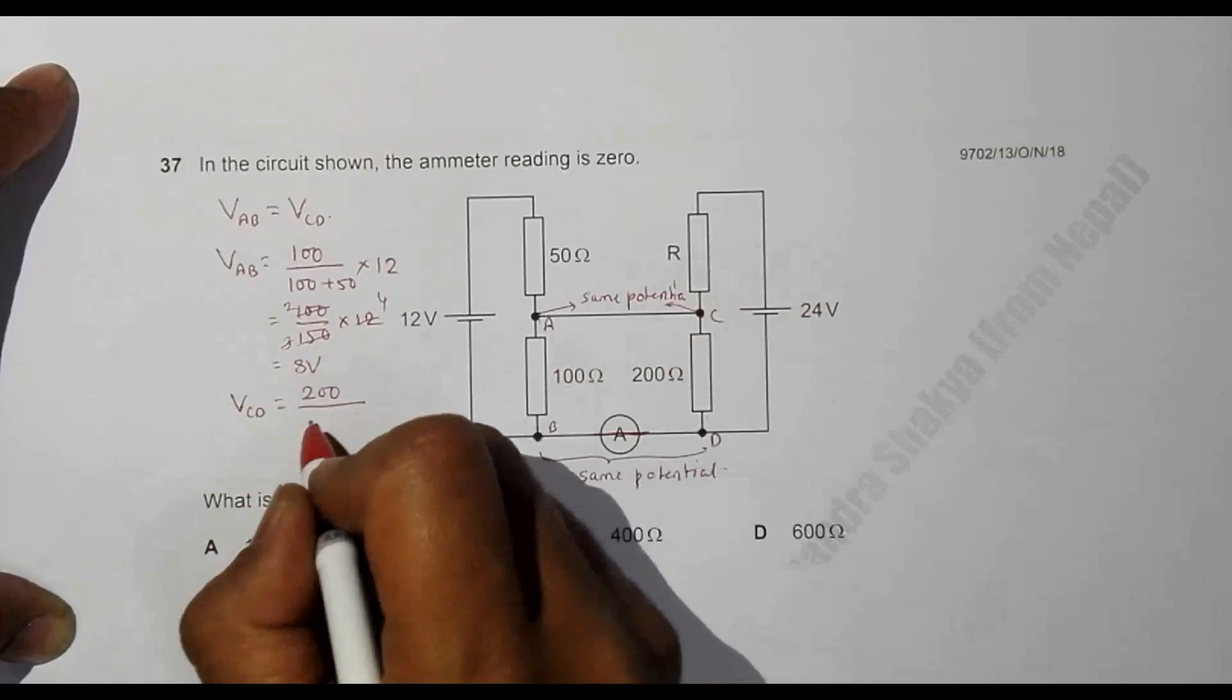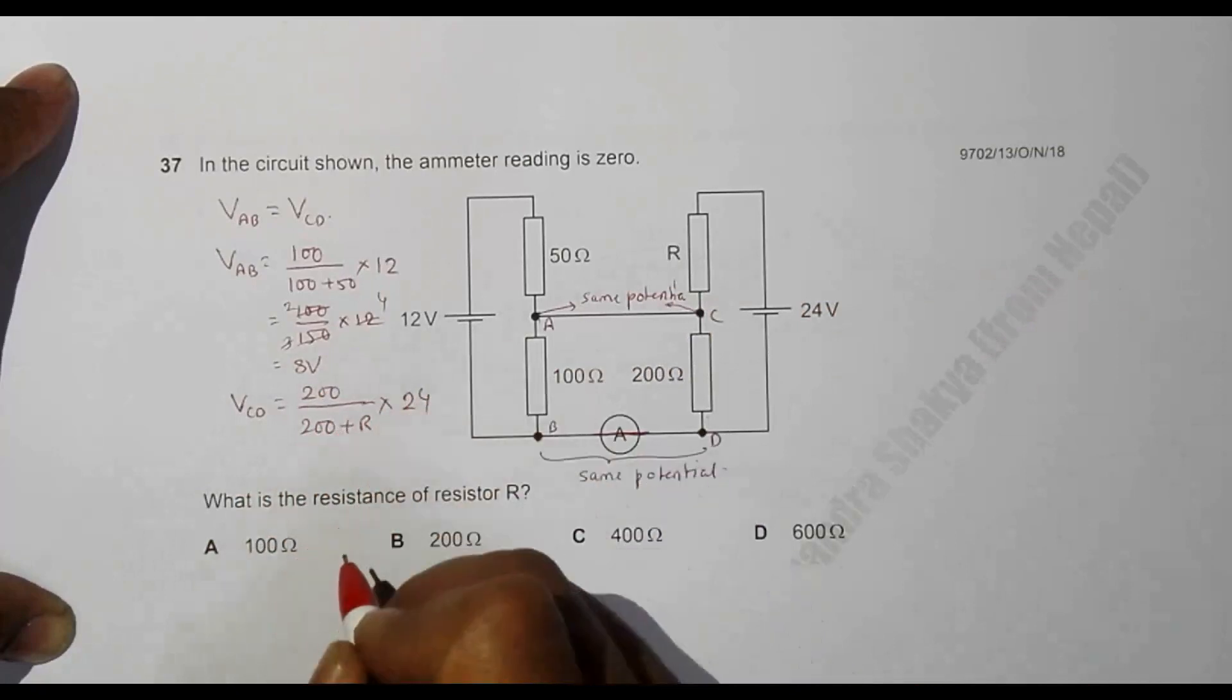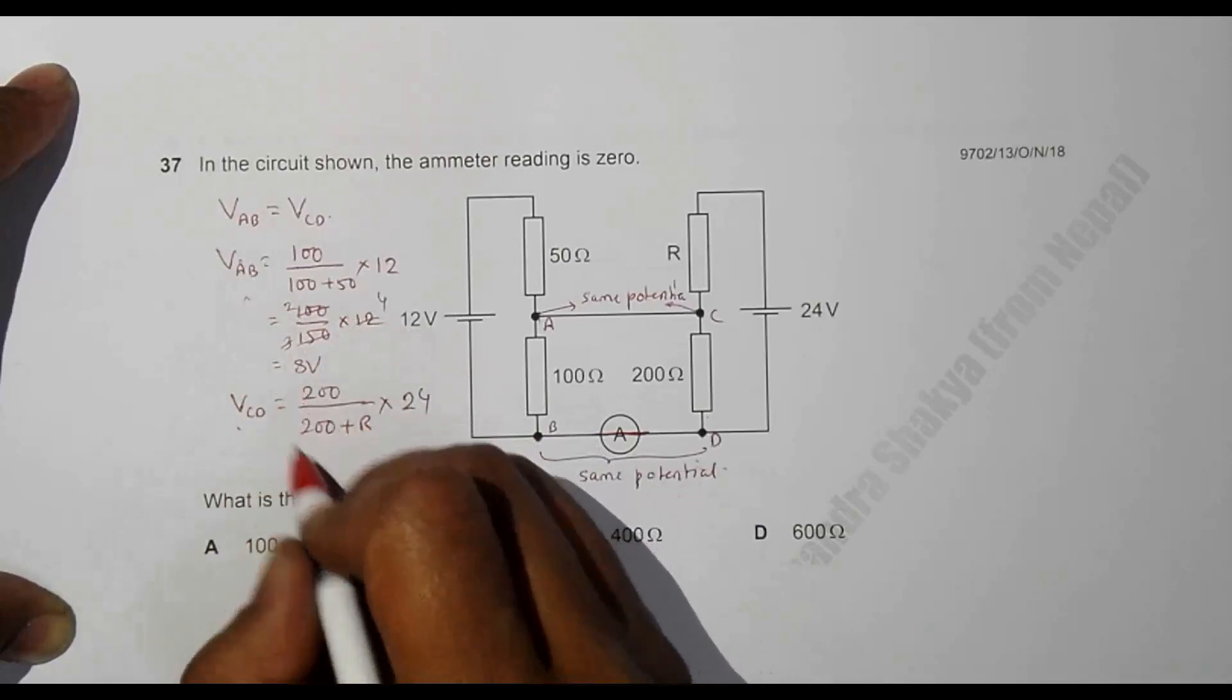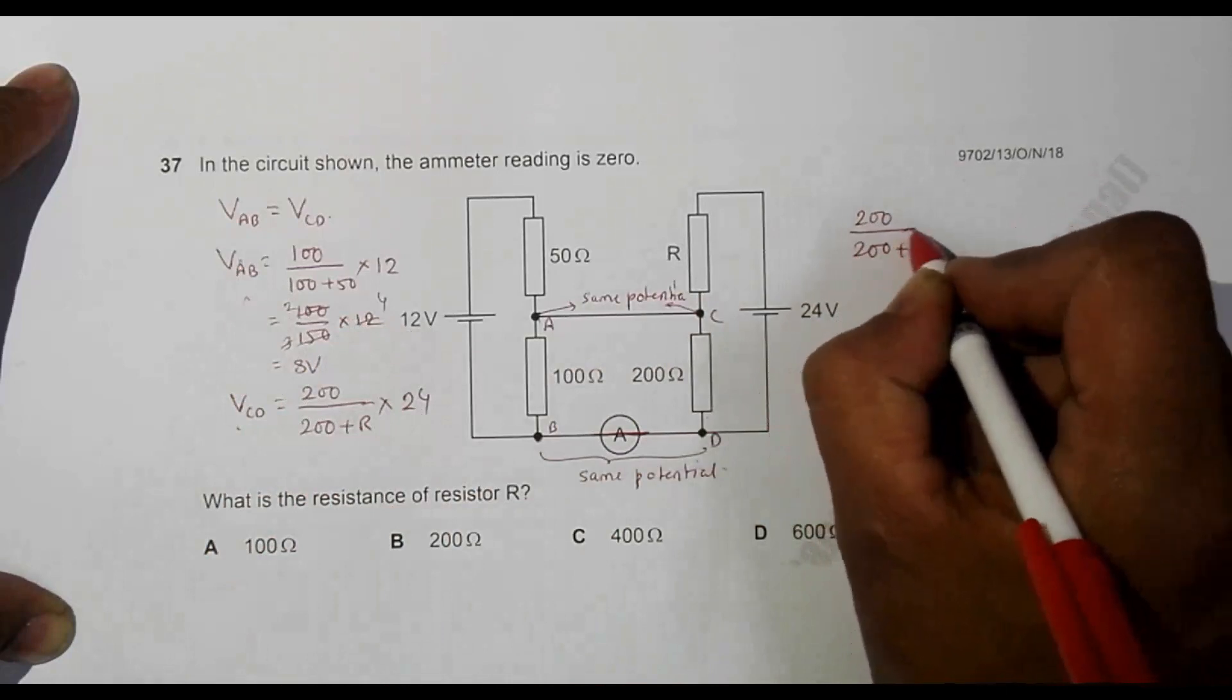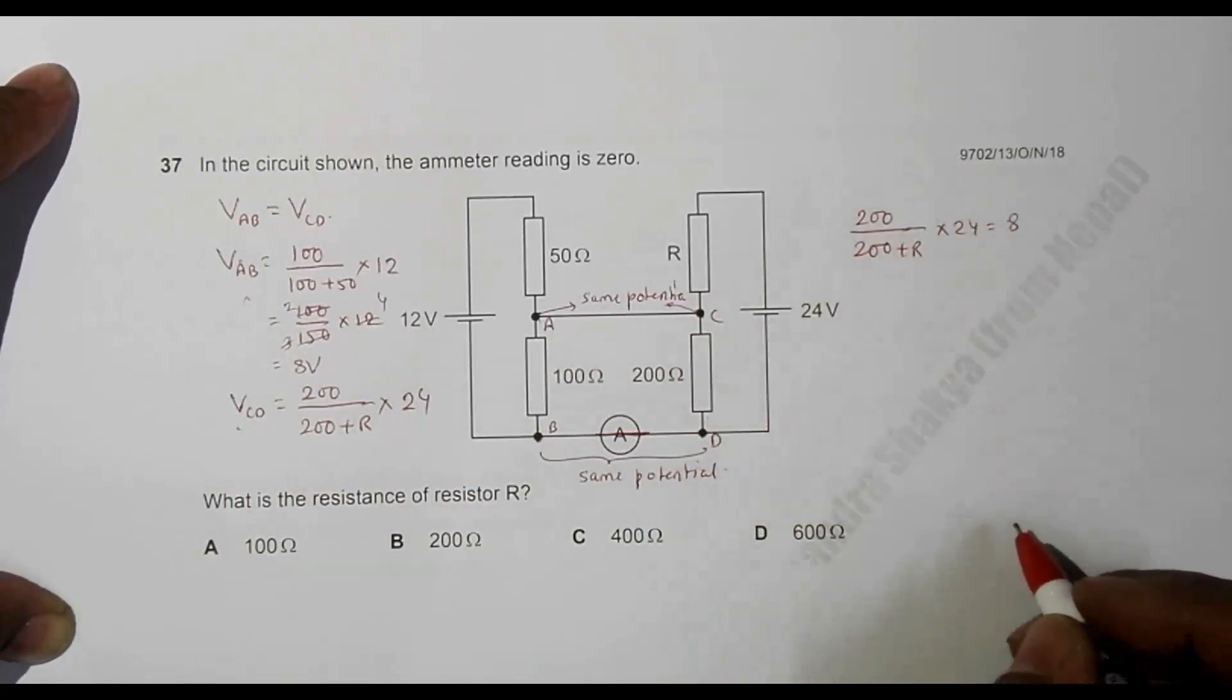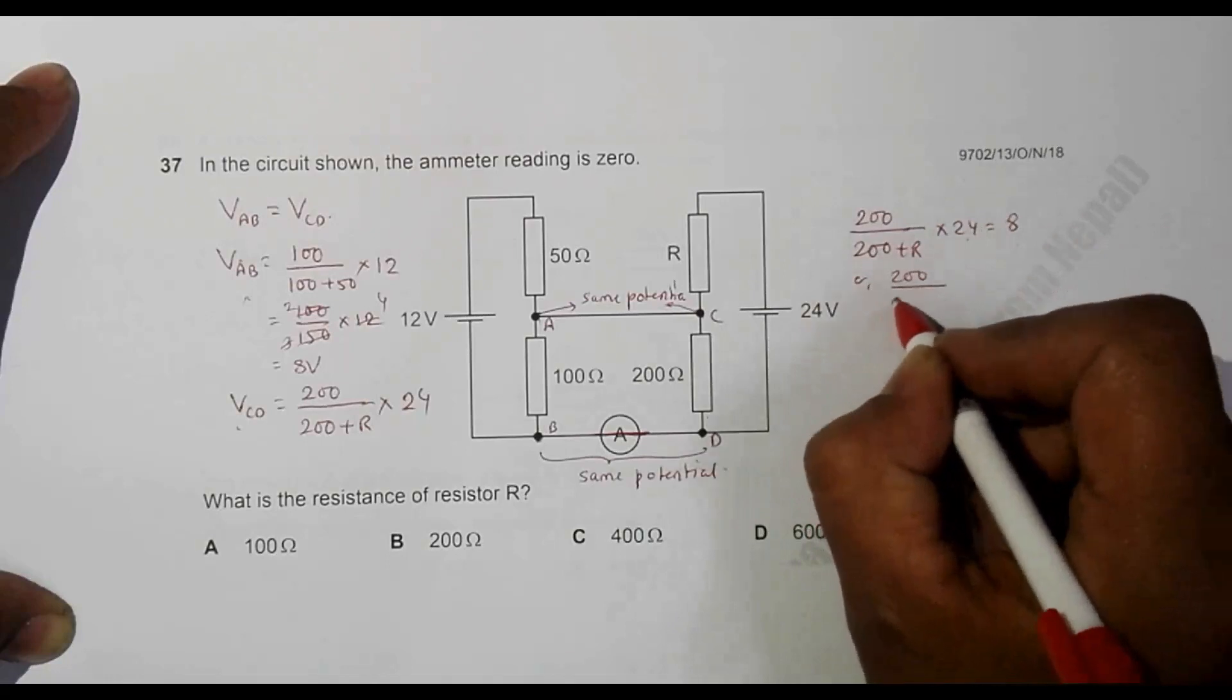Now, since this and this are equal, we should have 200 by 200 plus R into 24 should be equal to 8. Which gives us 200 by 200 plus R is equal to 8 by 24, equal to 1 by 3.